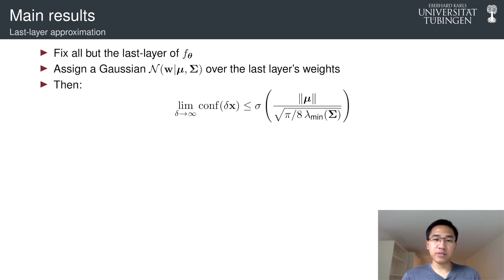And in this case, we can also show that this property, that's the same bound in the limit and also asymptotically, it also holds. And the boundary is similar. It only depends on μ and Σ. And Σ here can be seen as controlling the asymptotic confidence of the prediction.